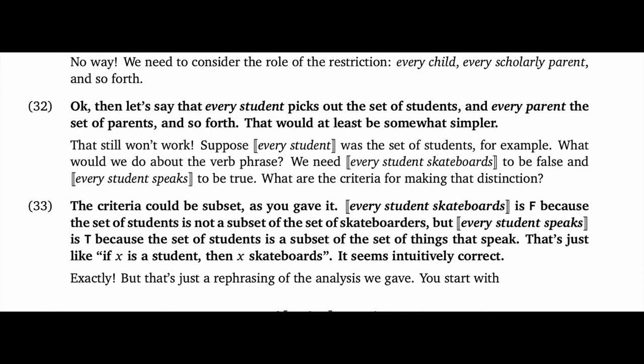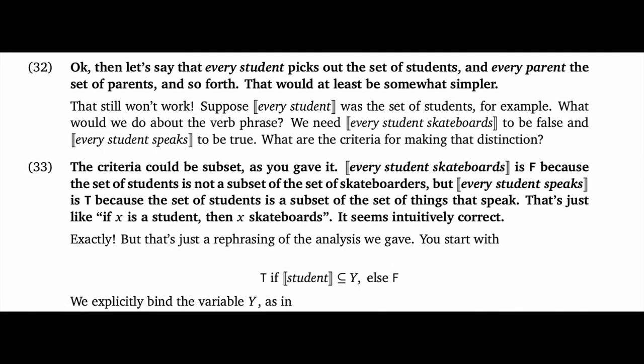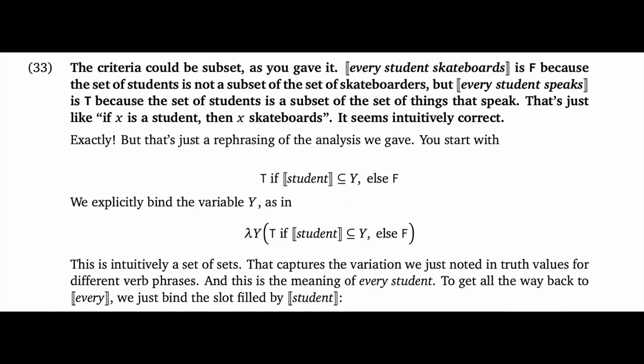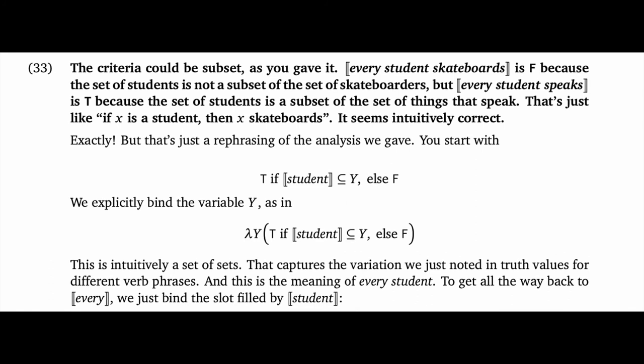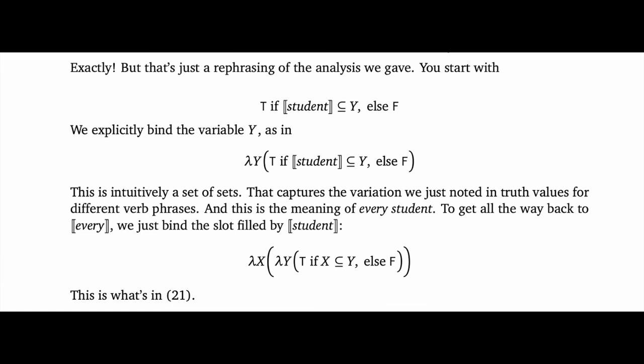And I say: exactly. But that's just a rephrasing of the analysis we actually gave. You start with this claim here, with the set of students as a subset of the set Y. In our framework, we explicitly bind the variable Y, and that gives us lambda Y at the start. This is intuitively a set of sets, and that captures the variation we just noted in truth values for different verb phrases. This is the meaning of every student. To get all the way back to the meaning of every, we just abstract out the first slot too, and now we've arrived at our proposed meaning in 21.